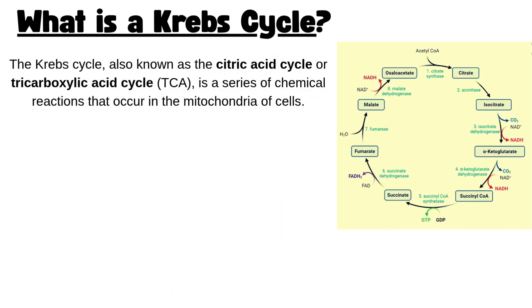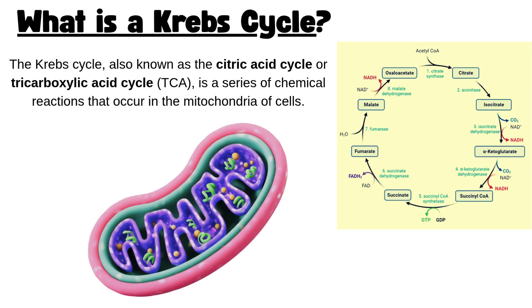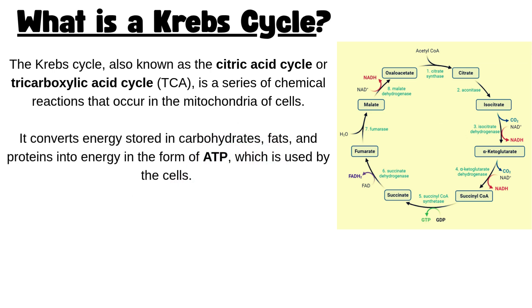The Krebs Cycle, also known as the citric acid cycle, or tricarboxylic acid cycle (TCA), is a series of chemical reactions that occur in the mitochondria of cells. It converts energy stored in carbohydrates, fats, and proteins into energy in the form of ATP, which is used by the cells.